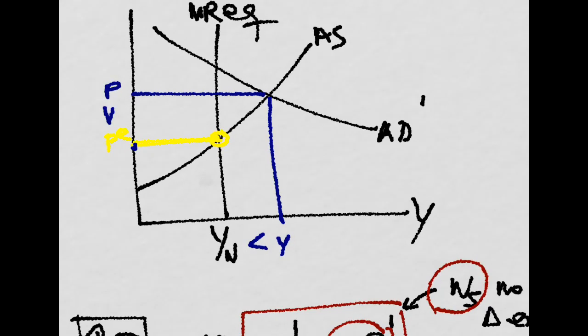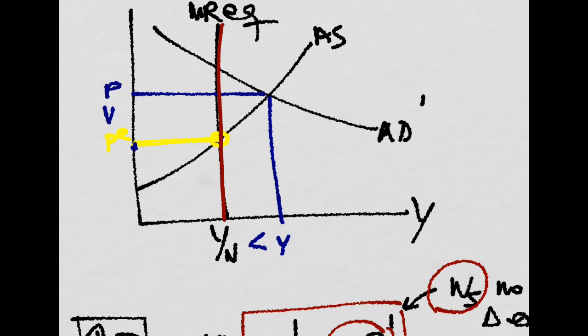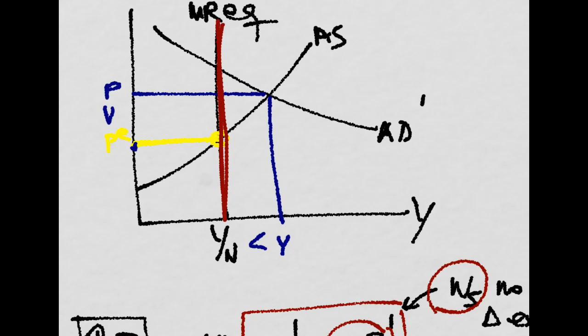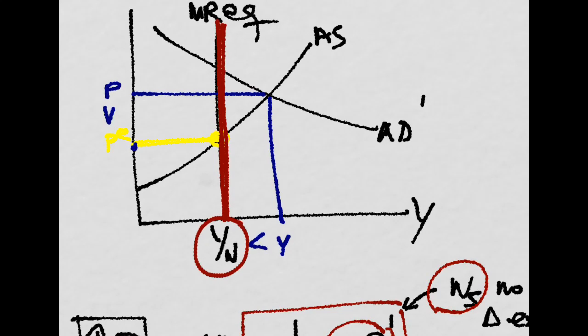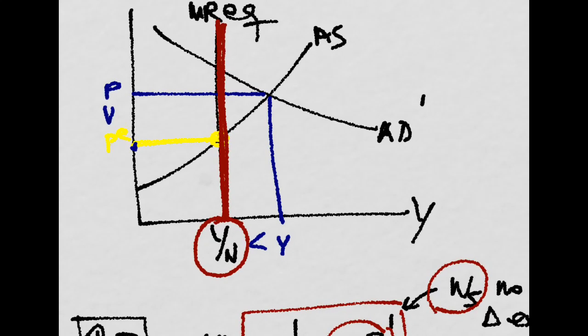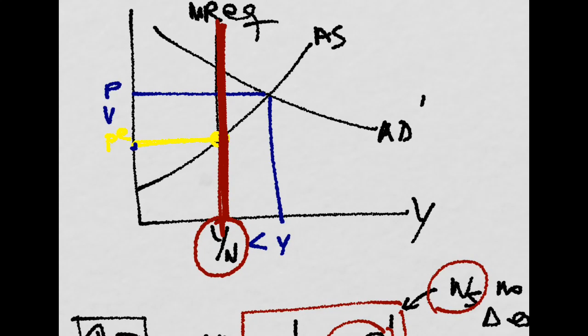Graphically, this would look something like this. This is the, remember, the natural output, and that is fixed for the medium run. Whenever we are at this level of output, we are in the medium run.